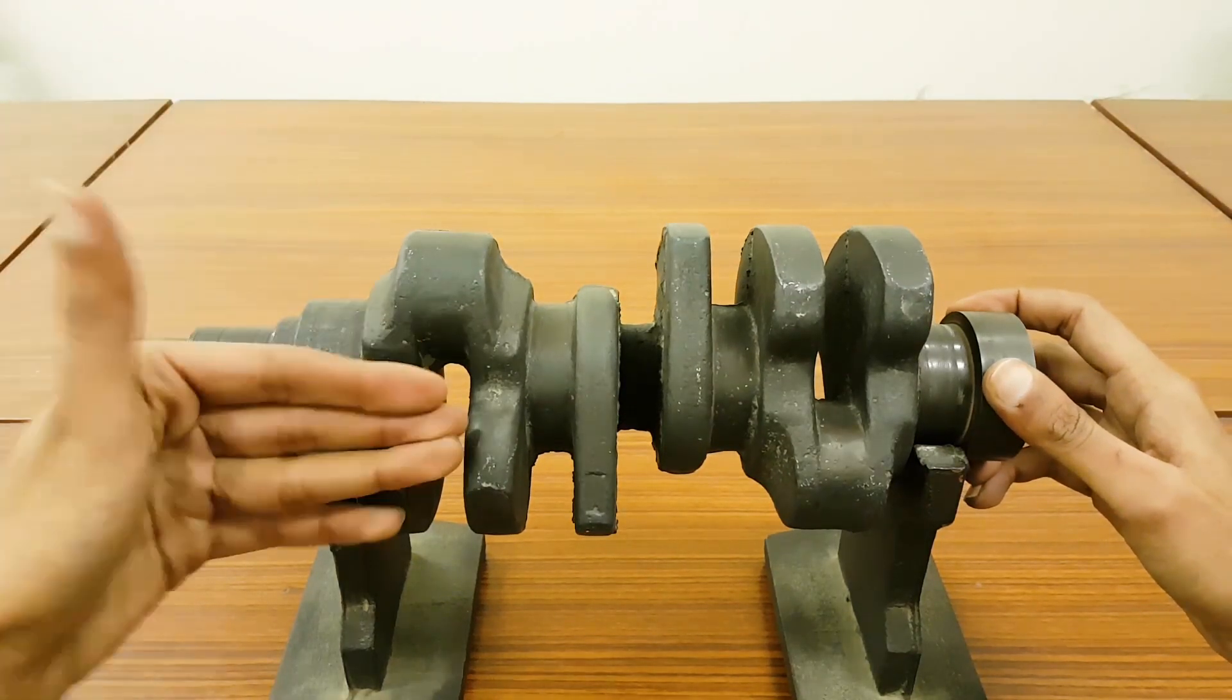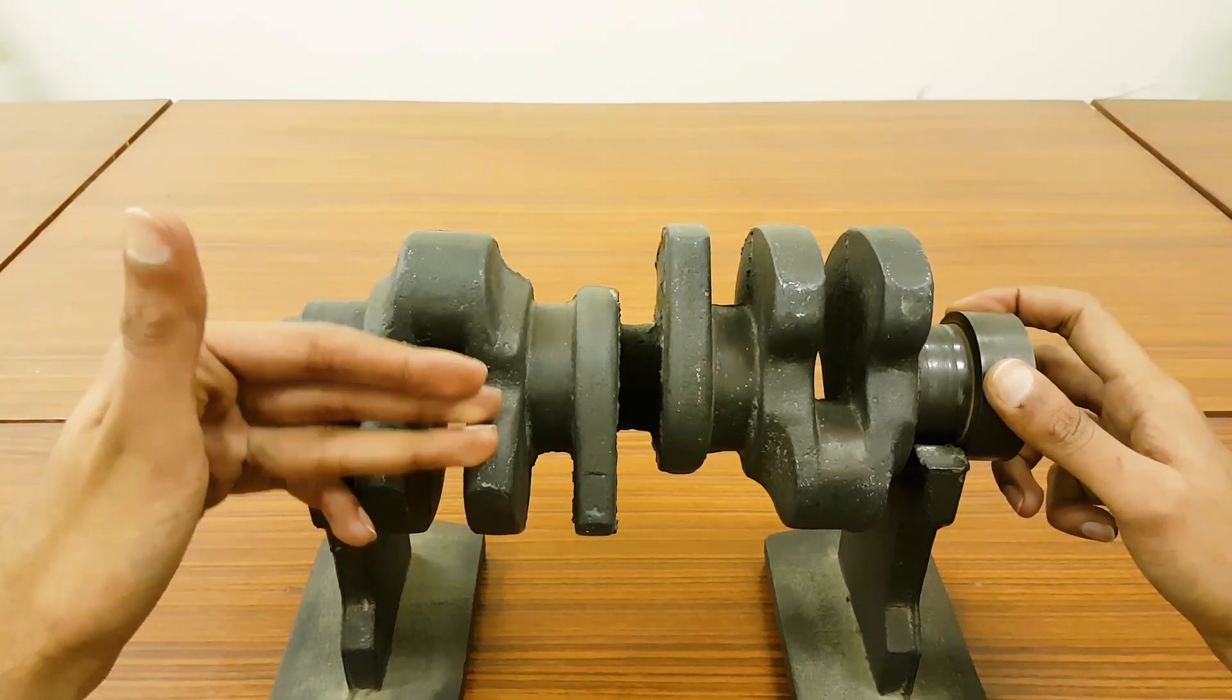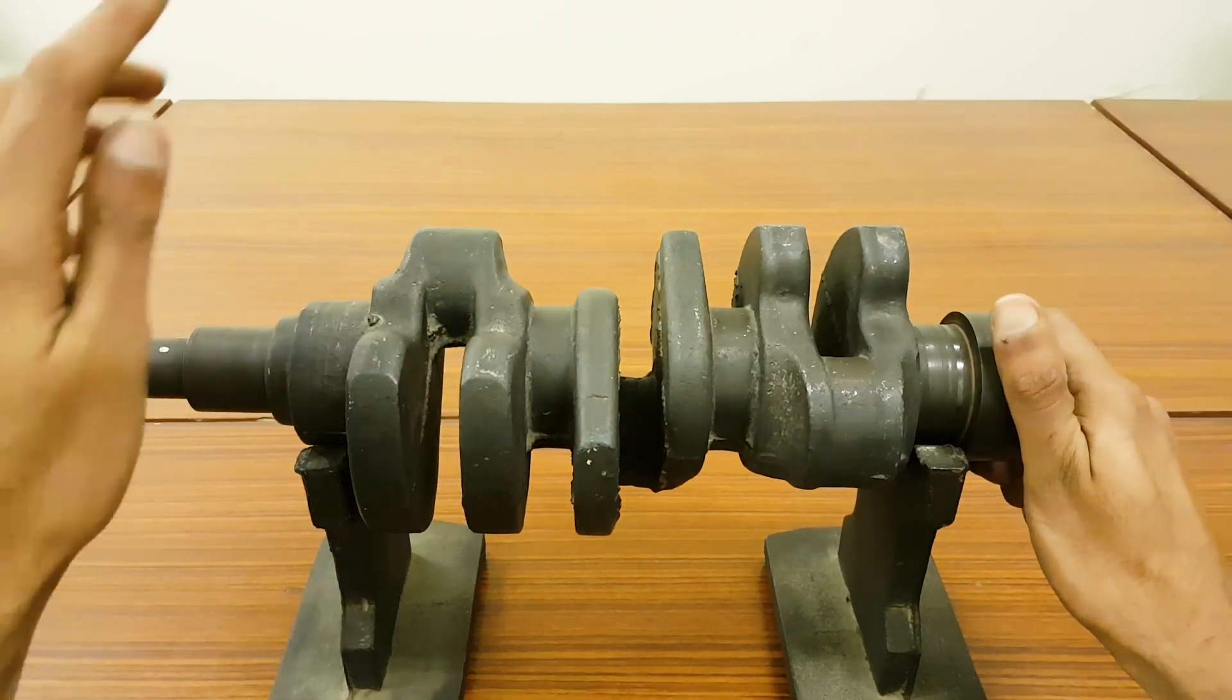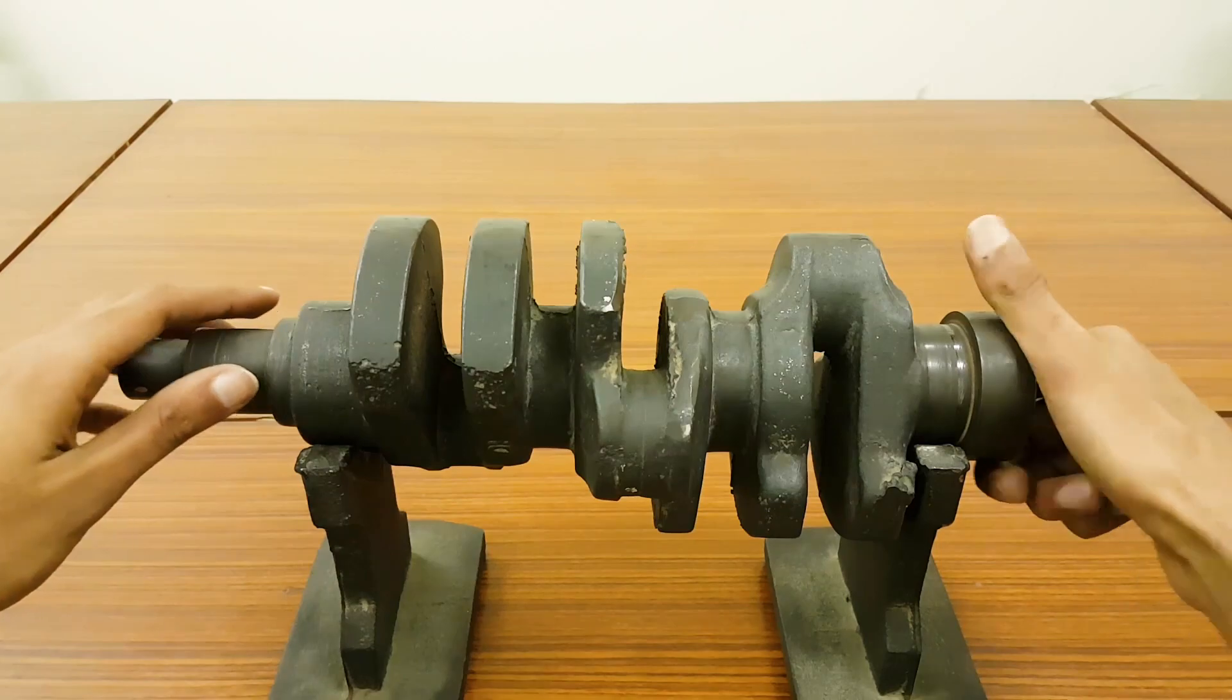How do they work? These basically have equal, almost equal mass or equal inertia that the connecting rod and pistons are producing. So whenever your connecting rod and piston are moving down, these weights are coming on top.